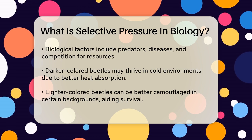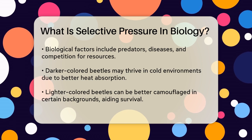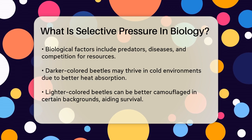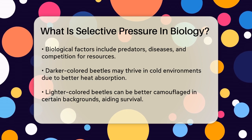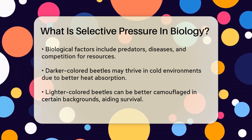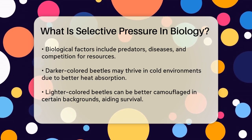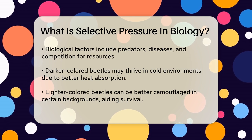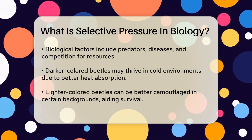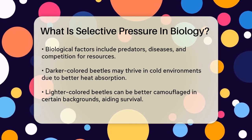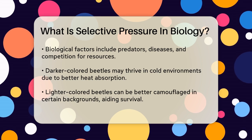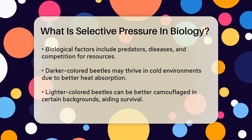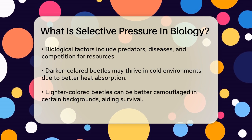Selective pressures can come from various sources, including environmental conditions like temperature, weather, and geographical location. Biological factors such as predators, diseases, and competition for resources also play a significant role. For example, in a hot and dry climate, plants that have adaptations to store water or absorb it more efficiently will have a better chance of survival and reproduction.